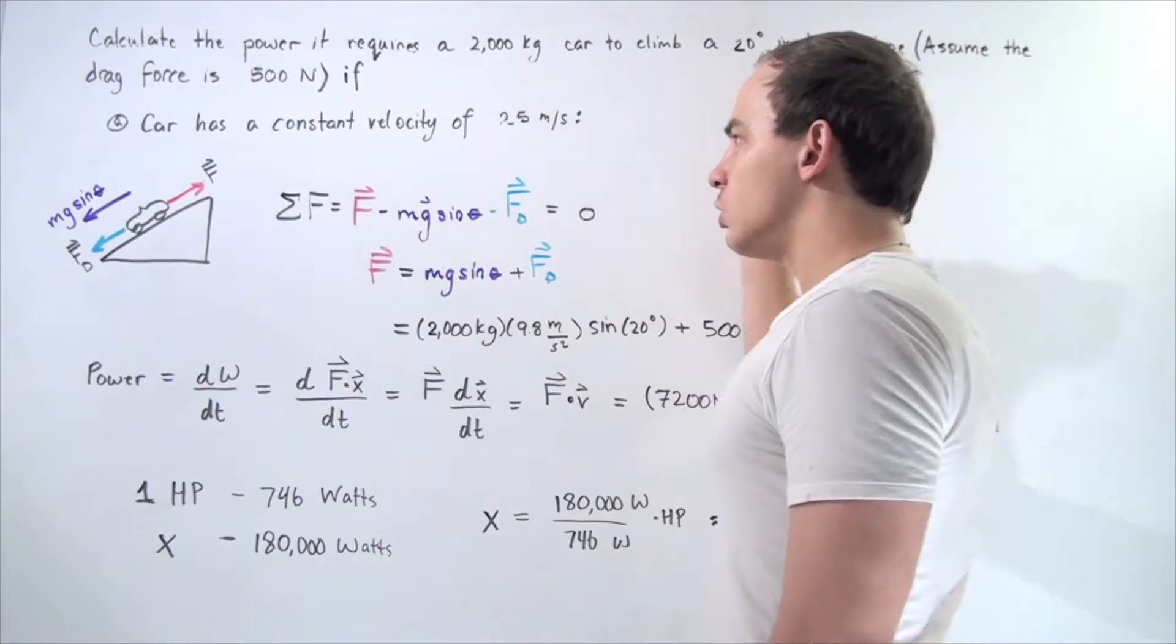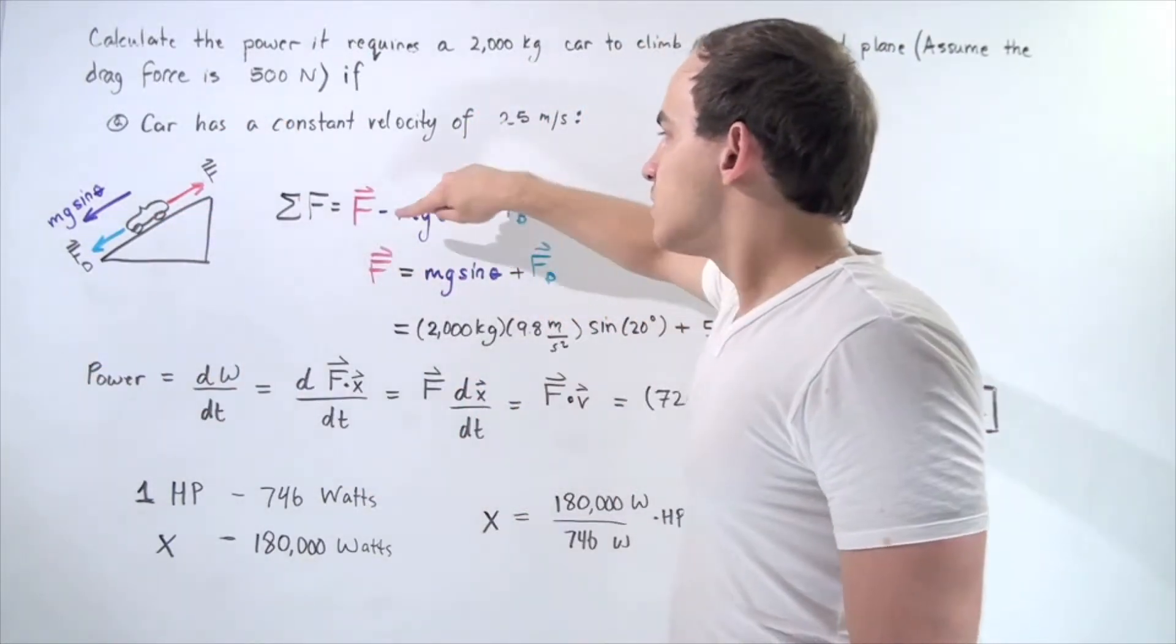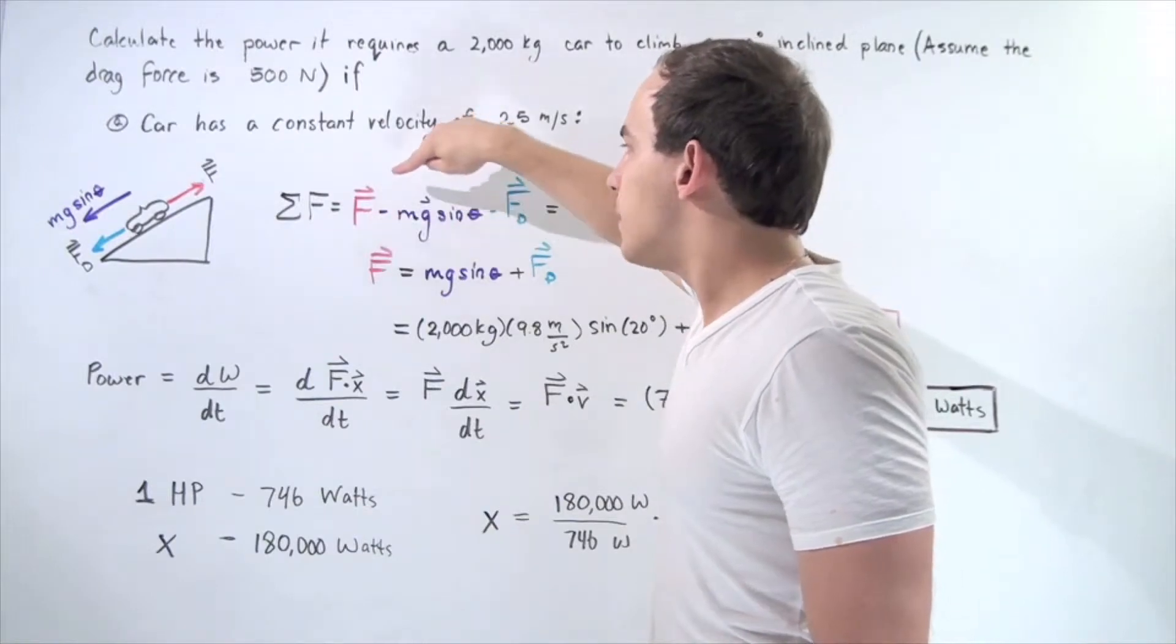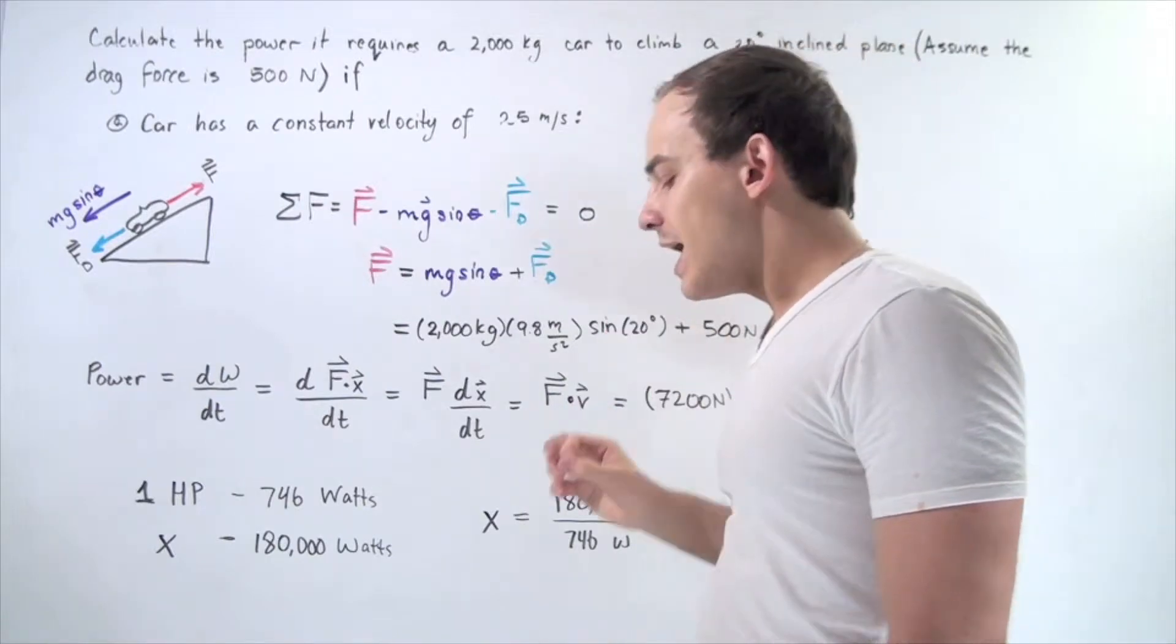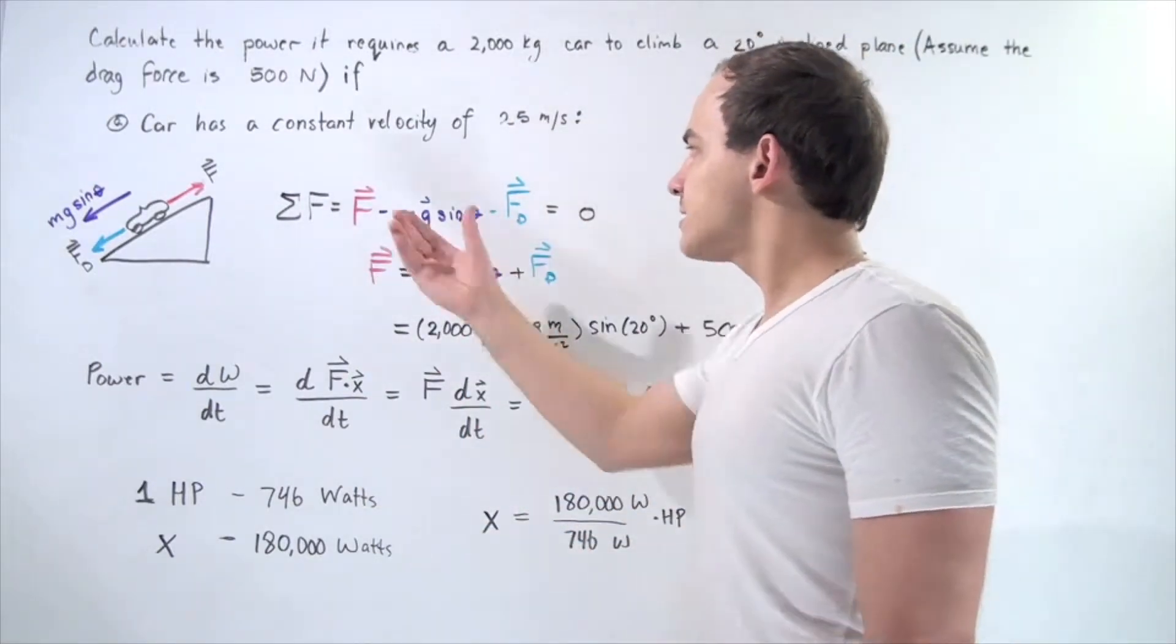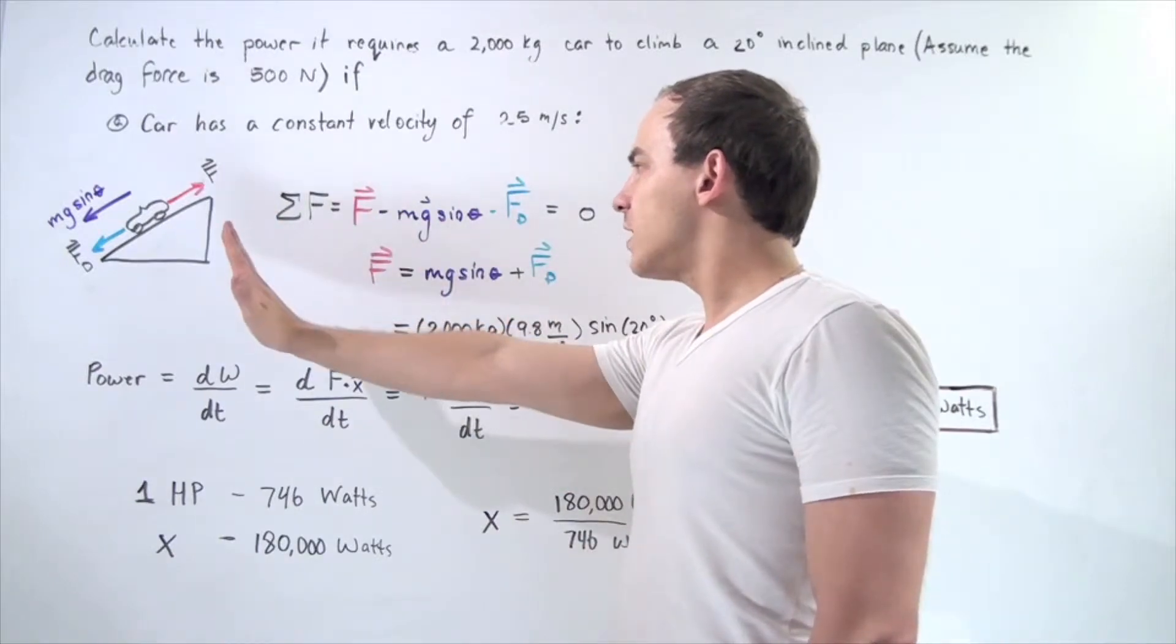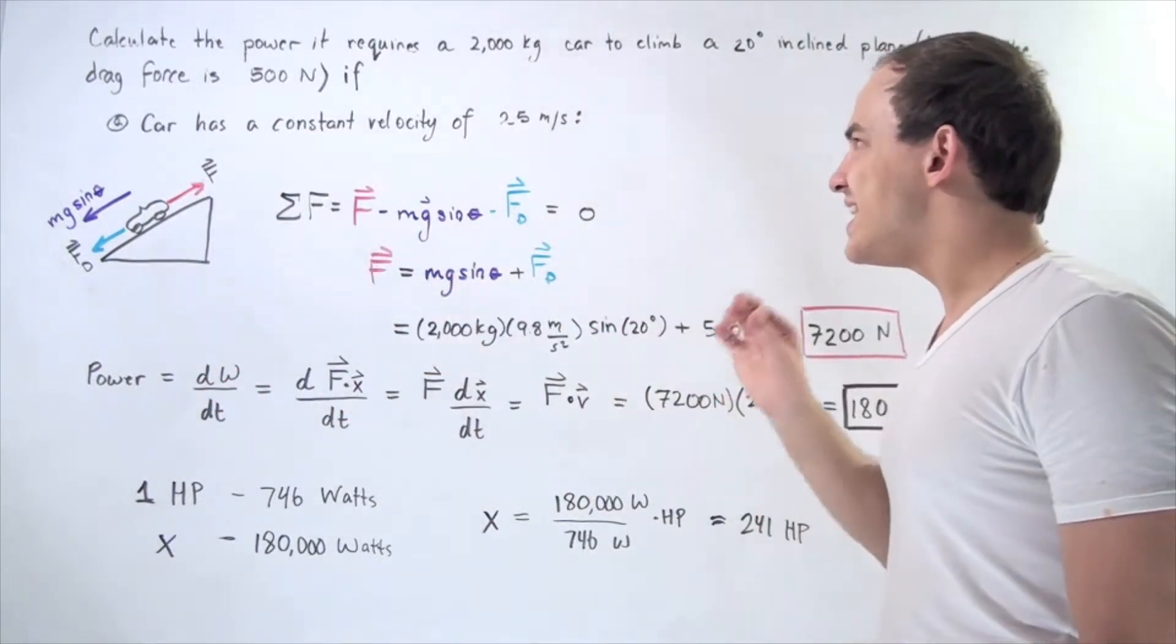We choose upward along the inclined plane to be positive, downward to be negative. The force we want to find minus the gravitational force minus the drag force equals zero. Since we want to find what this force is, let's leave this on the left side and bring everything else to the right side.